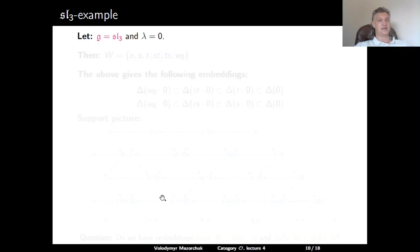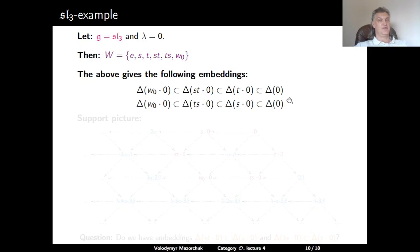Let's consider the SL₃ example with λ = 0. The Weyl group W is the symmetric group S₃ with six elements: e, and simple reflections s, t, and their products st, ts, and the longest element w₀ = sts = tst. The previous slide gives embeddings: Δ(0) ⊃ Δ(t · 0) ⊃ Δ(st · 0) ⊃ Δ(w₀ · 0) (writing w₀ = tst), and also Δ(0) ⊃ Δ(s · 0) ⊃ Δ(ts · 0) ⊃ Δ(w₀ · 0) (writing w₀ = sts).